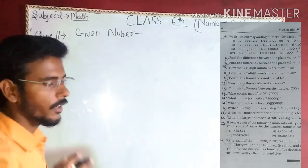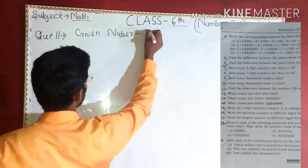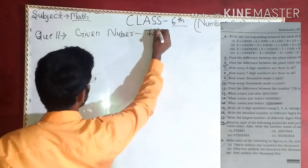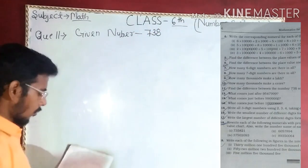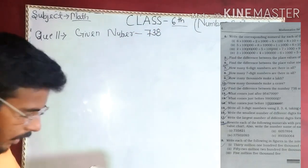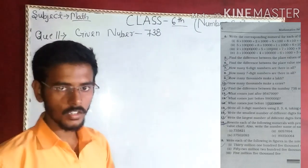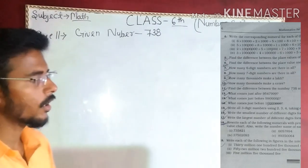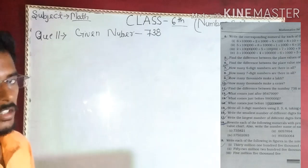Given number is 738. We need to find what is obtained on reversing the digits — find the difference when obtained on reversing the digits.